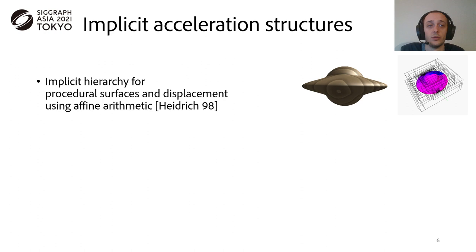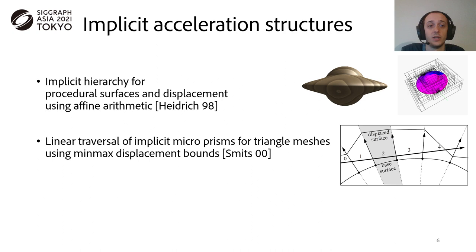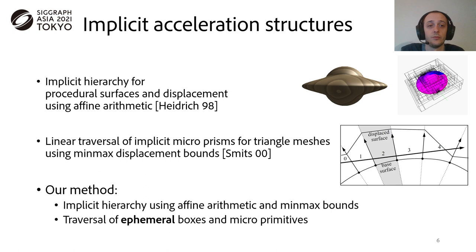Some of the previous methods not only consider the displaced surface as implicit, but also consider implicit acceleration structures for intersecting them. Heidrich and colleagues used the affine arithmetic in the context of procedural surfaces with procedural displacement. On the other hand, Smith and colleagues showed that min-max displacement bounds can be used to perform a linear traversal of implicit micro-prisms for triangle meshes. Our method is inspired from both of these works, since we use an implicit hierarchy using affine arithmetic and min-max bounds to perform a traversal of ephemeral bounding boxes and micro-primitives.